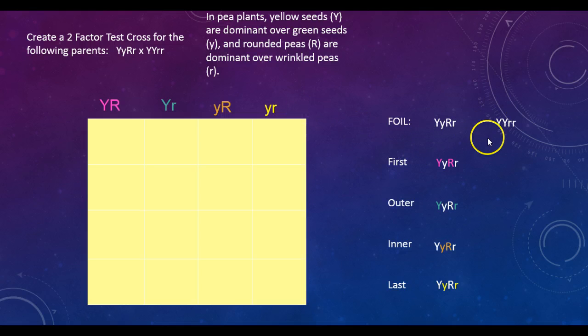We're going to do the same thing for the next parent. This one's going to be a lot easier because it's going to be the same allelic combination because all we have are big Ys and big Rs. So, let's just go ahead and do that big Y, big R the whole way down.